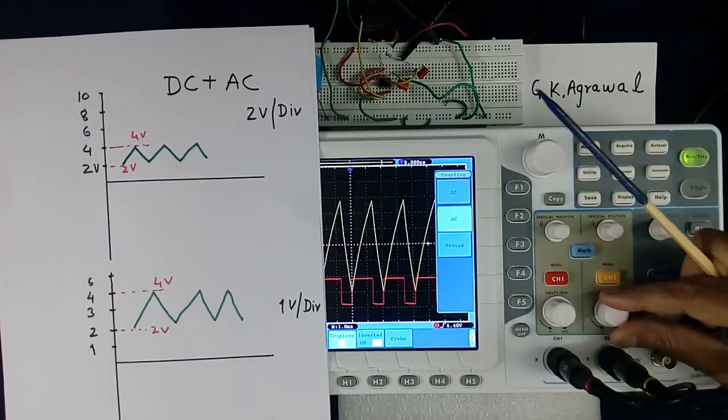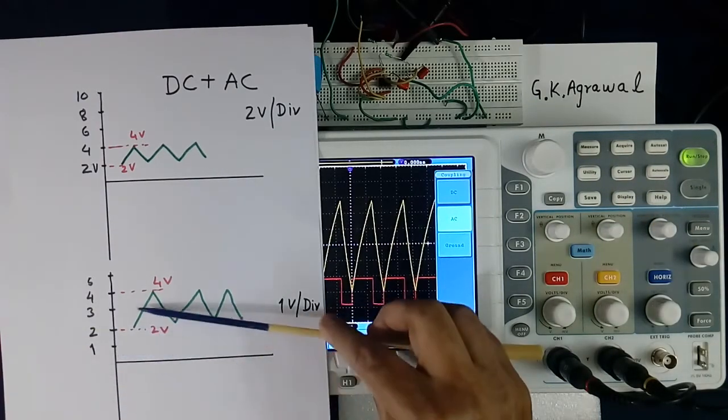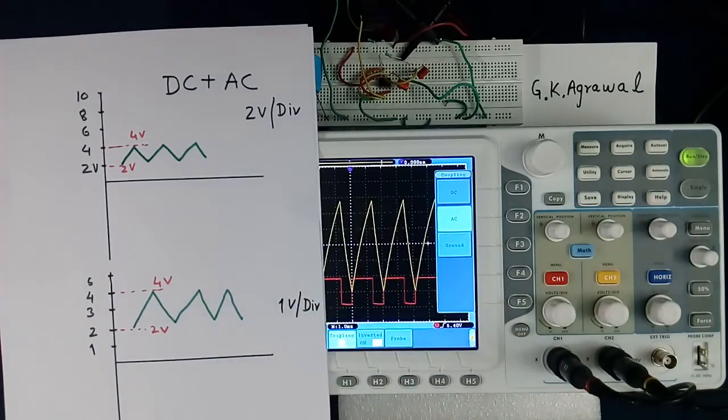Now if you make like this, this DC problem will not be there. This AC alone you can extend the scale and see the AC design.